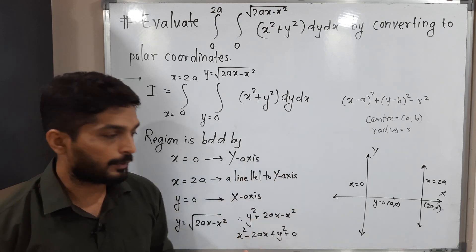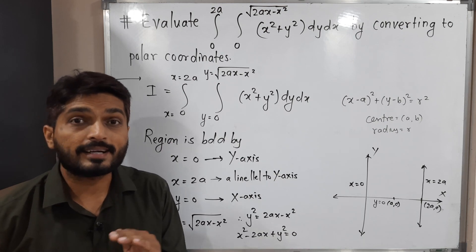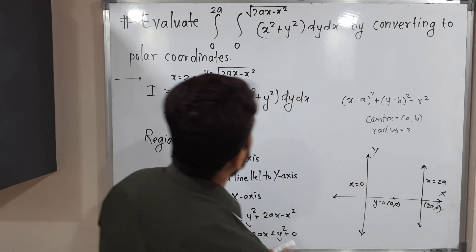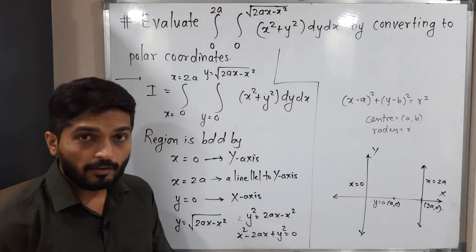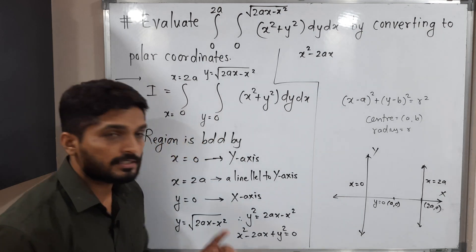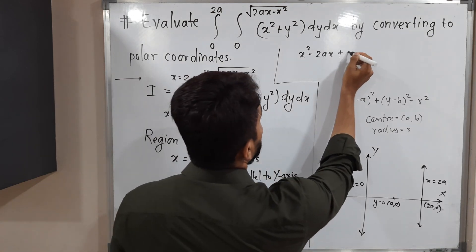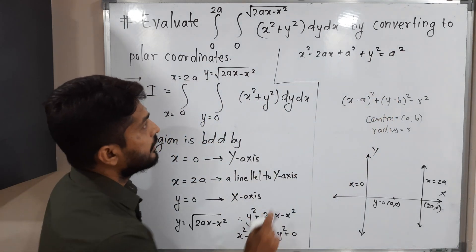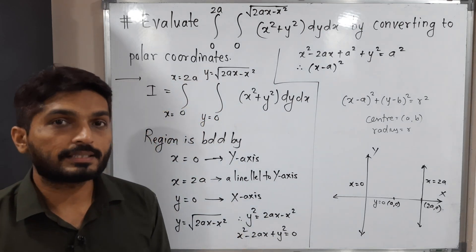Rearranging gives x² - 2ax + y² = 0. To express this in standard form, we complete the square: take half the coefficient of x, which is a, and square it to get a². Adding a² to both sides: x² - 2ax + a² + y² = a², which gives (x - a)² + y² = a².